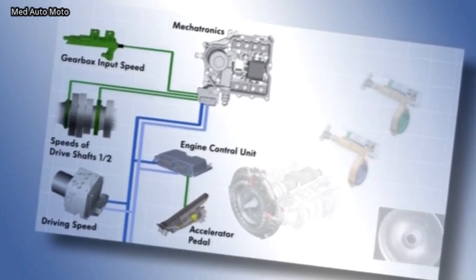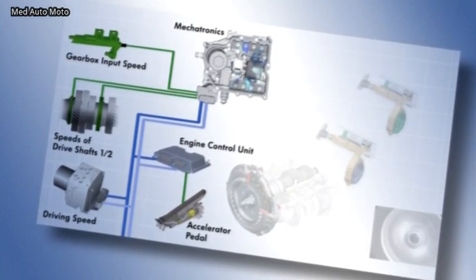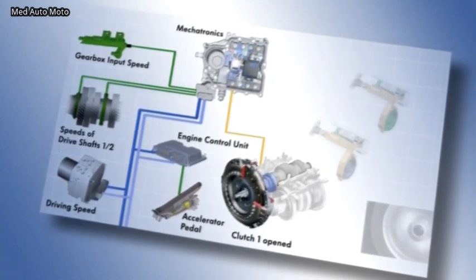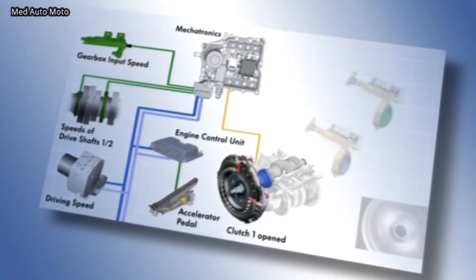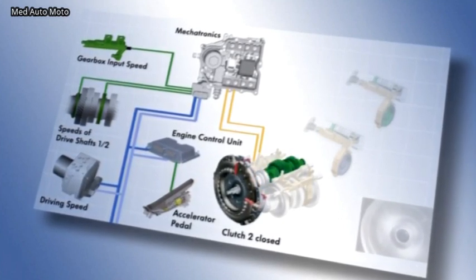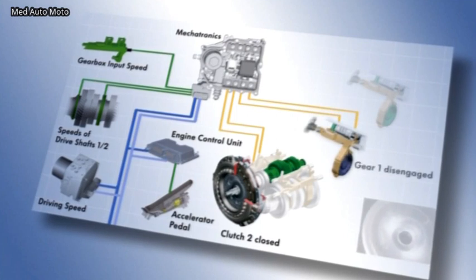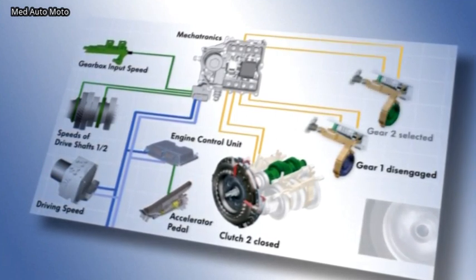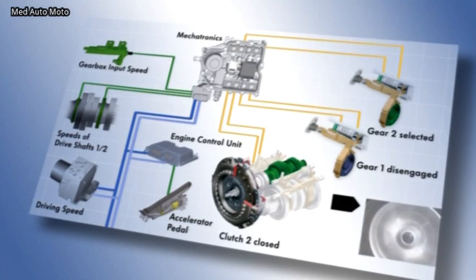From the data, the mechatronics unit recognizes whether the gearbox needs to change from first to second gear, for example. To do this, clutch 1, currently closed, is opened and clutch 2 is closed by the control cylinders. At the same time, the first gear is disengaged. The torque is now transferred without interruption of the driving power to the previously selected second gear.